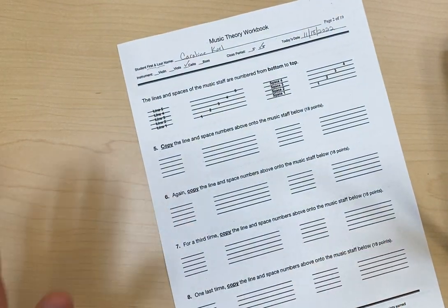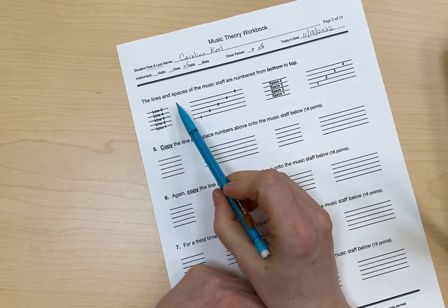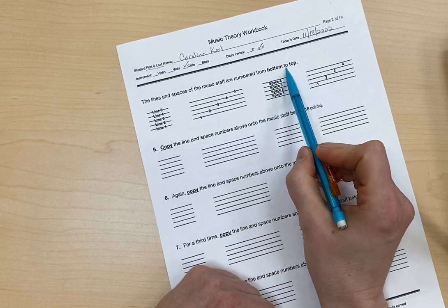And then now let's read what we're learning on this page. The lines and spaces of the music staff are numbered from the bottom to the top.